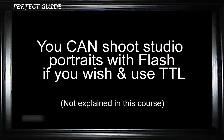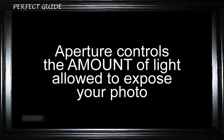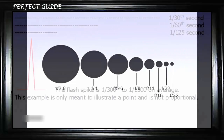The first fundamental rule is that the shutter speed on your camera controls the length of time that light is allowed to expose your picture. Your f-stop or aperture controls only the amount of light that exposes your picture. Go to a wider aperture and you get more light; go to a smaller aperture and you get less light when using the exact same shutter speed.